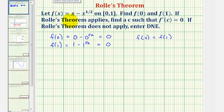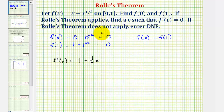Next we'll find our derivative function, set it equal to zero, and solve for x, which will give us our value of c. So f prime of x would be equal to the derivative of x, which is one, minus the derivative of x to the one-half, which would be one-half times x to the power of one-half minus one. Let's write this as 1 minus 1 over 2 times x to the negative one-half, which we'll move to the denominator and write as x to the positive one-half in the denominator.